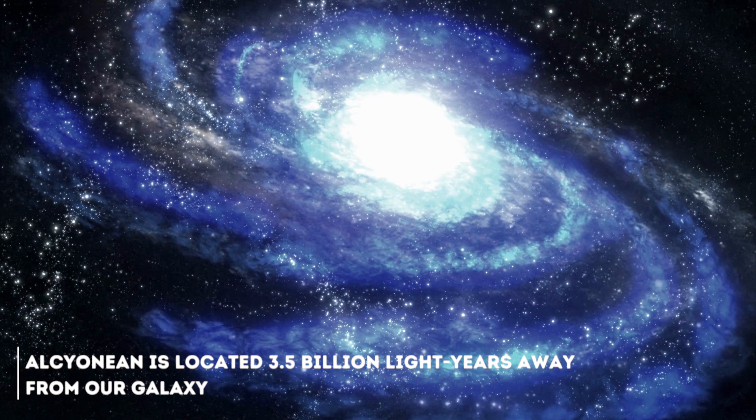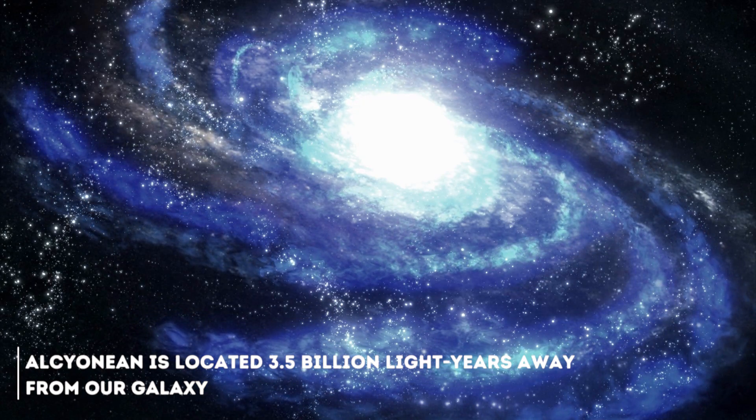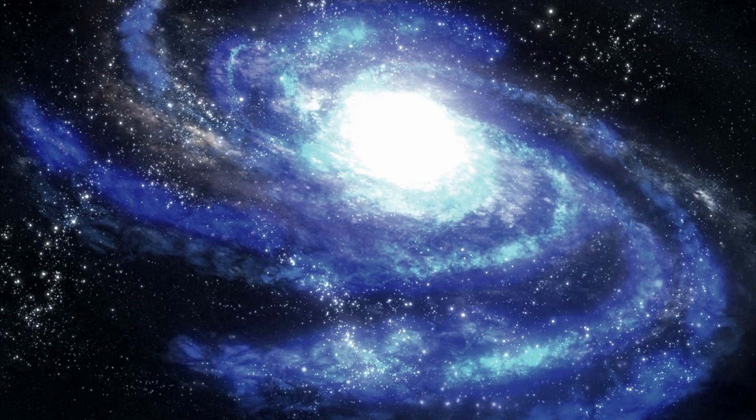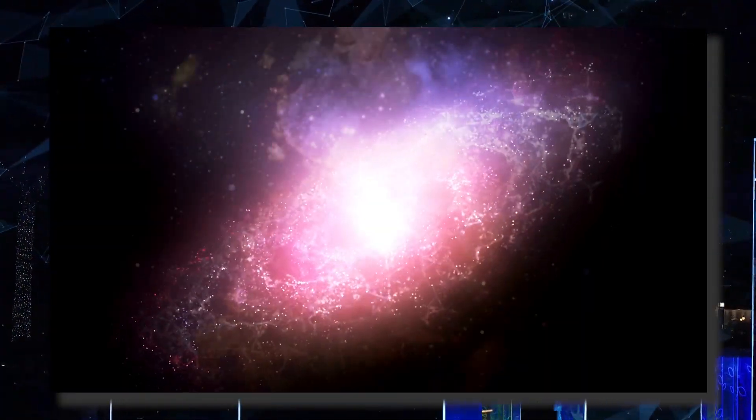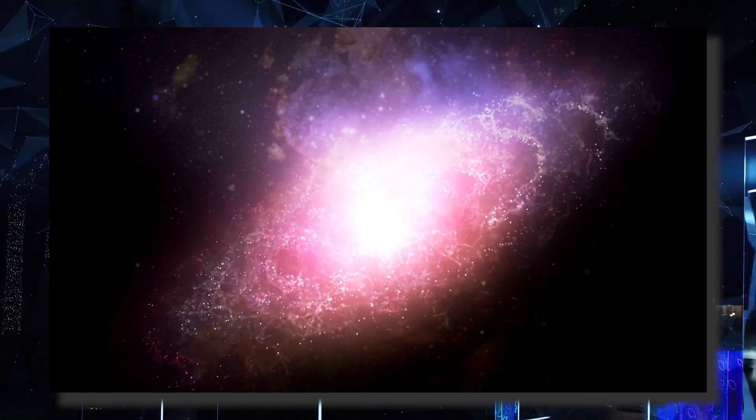Alcinean is located 3.5 billion light years away from our galaxy. According to several scientists, this galaxy is one of the strangest things ever found in our universe. The beginning of its history is complicated in itself. This massive and imposing galaxy was discovered by accident, in what has been catalogued as a great stroke of luck.